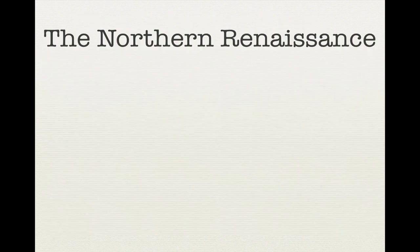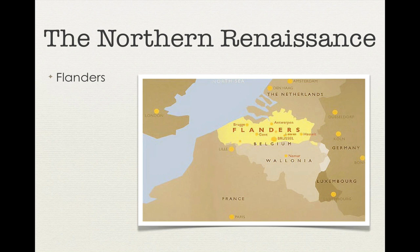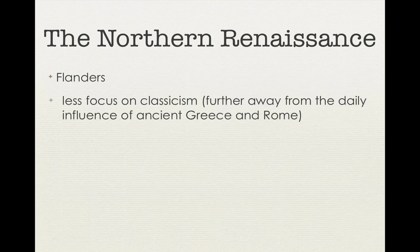As humanist ideas were spreading throughout Europe with the aid of the printing press, the Renaissance in the north took on its own identity separate from the Italian Renaissance. For example, instead of Florence being the epicenter of creativity, the majority of northern Renaissance art blossomed in Flanders — the northern region of Belgium. Also, there was a significant lack of classicism in the northern Renaissance.